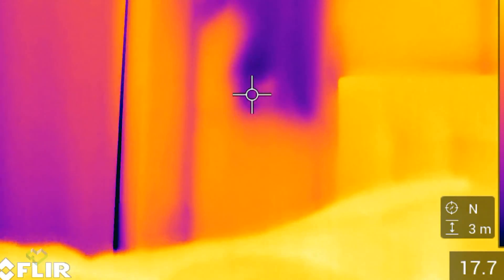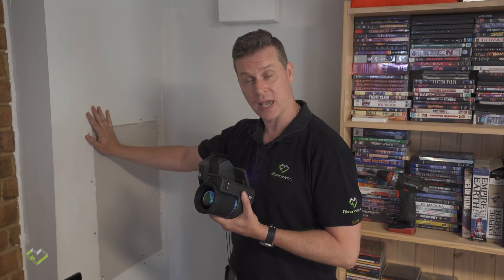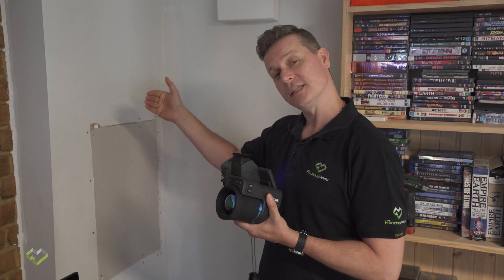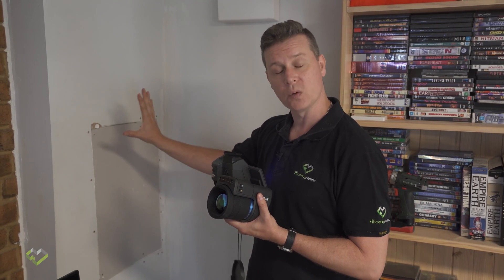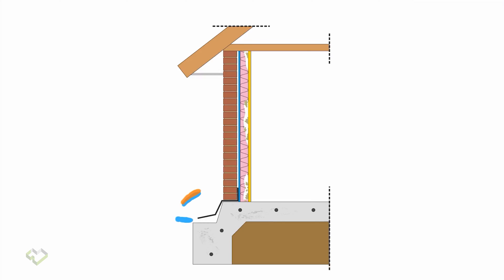if insulation comes away from the plaster — the air barrier — then this insulation will not be working, because air from outside can easily get around and bypass the insulation and come in contact with this surface.